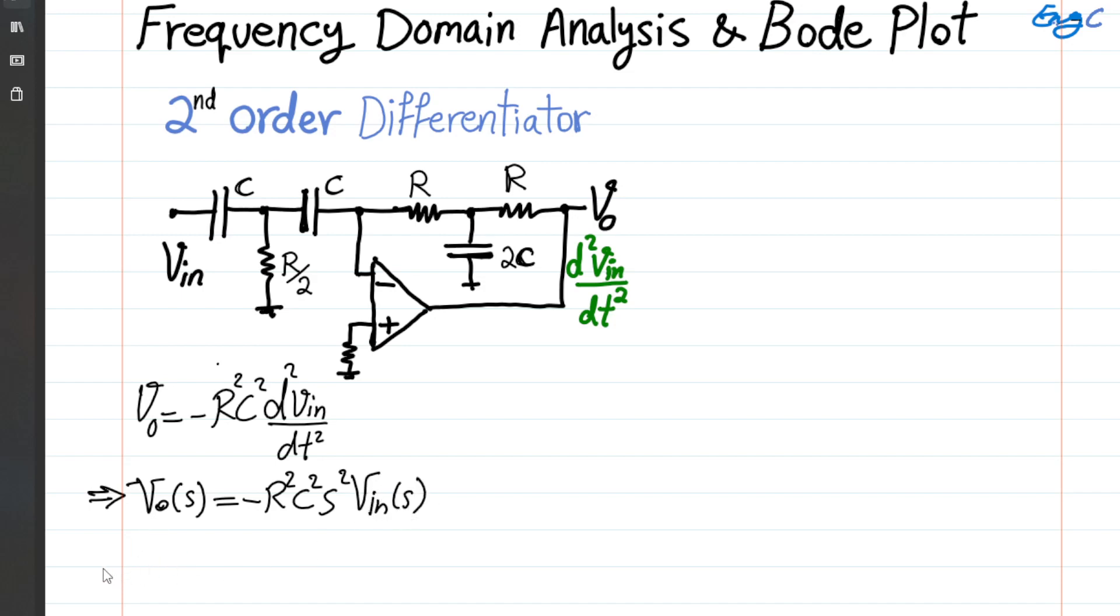And when we divide these two, we get the voltage transfer function for this circuit, which is H of S is simply Vout divided by Vn and we get what we anticipated should be because of the second-order derivative behavior, which is negative R squared C squared S squared.